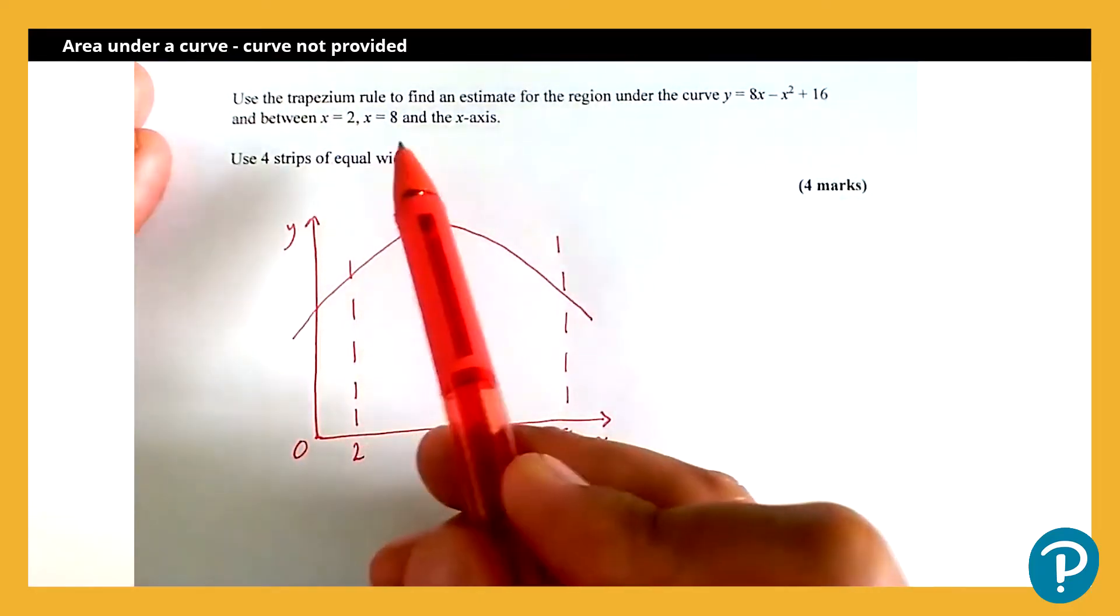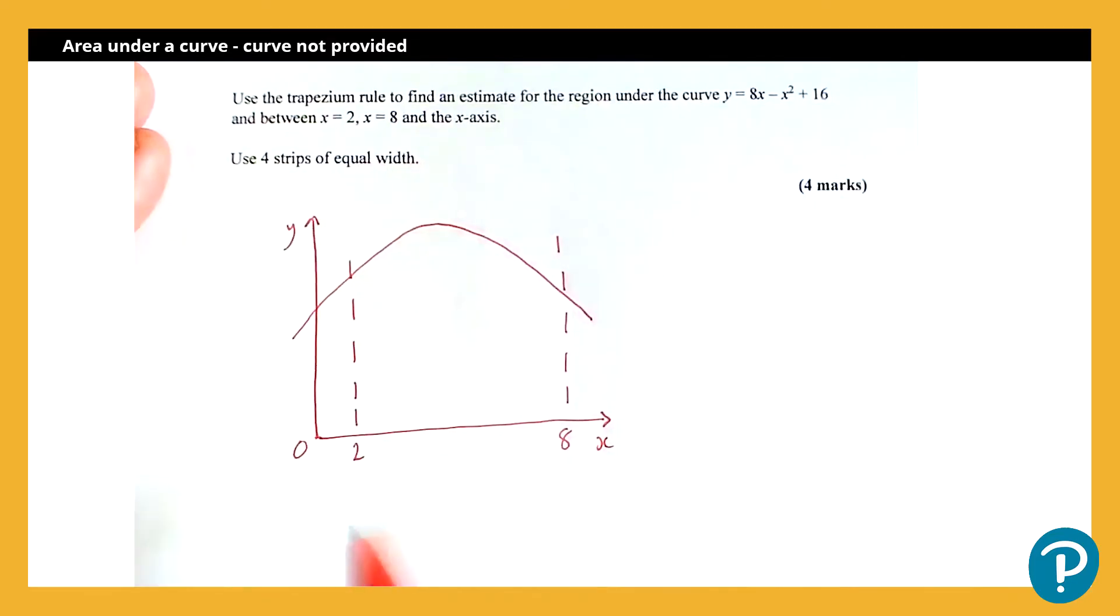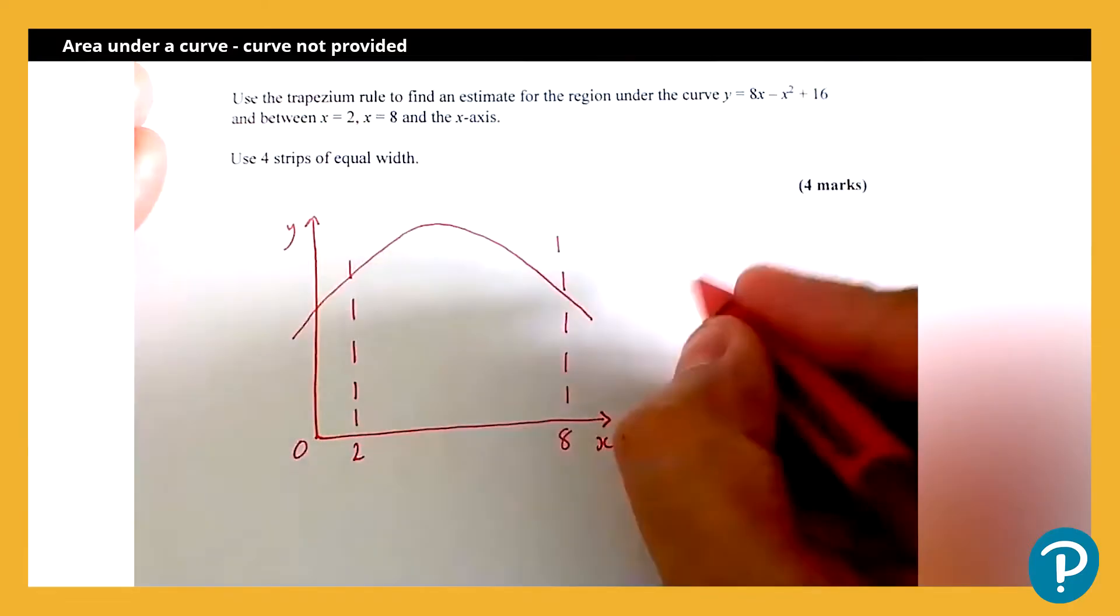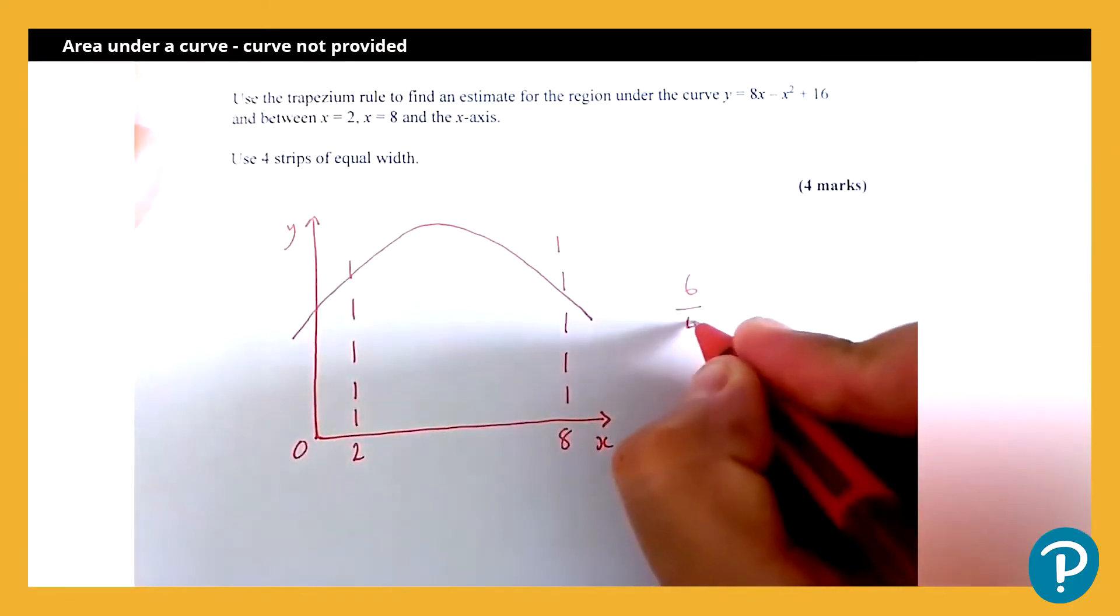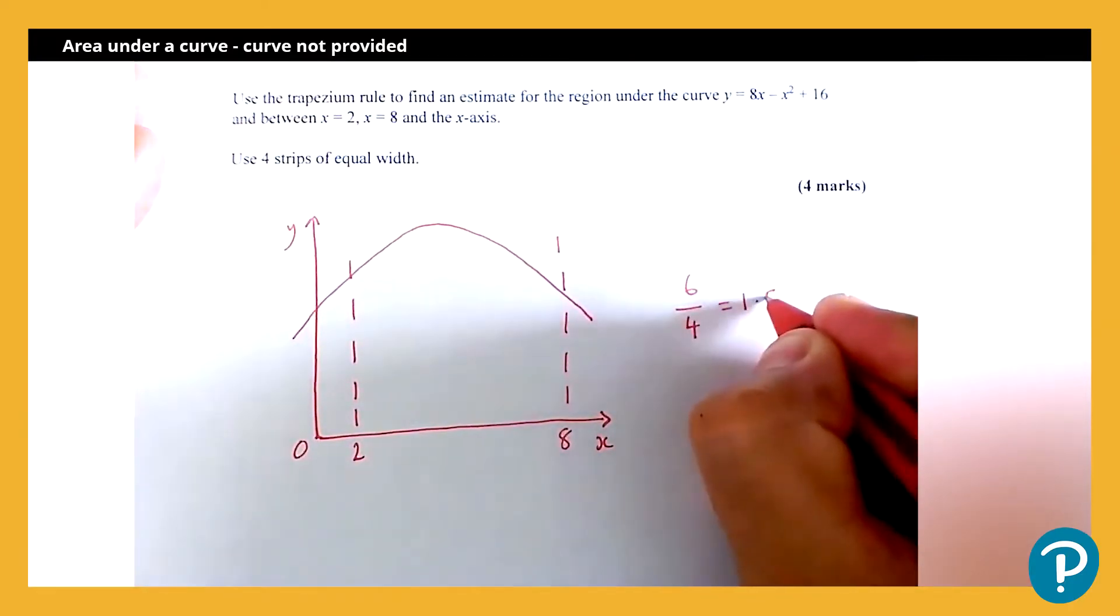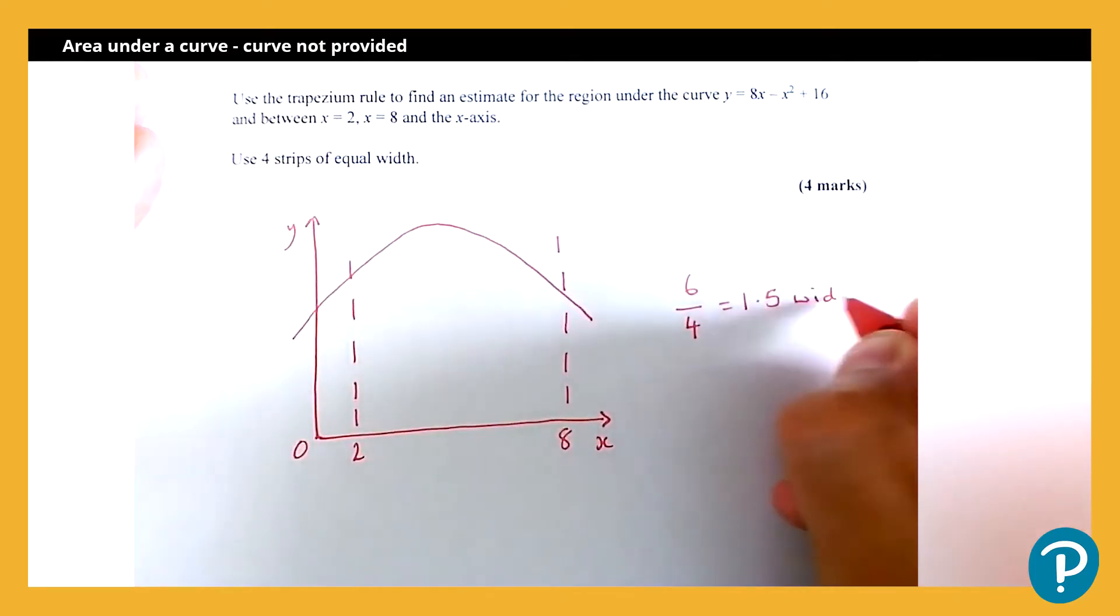Next thing it tells me is we need to use four strips of equal width. Now I need to work out how wide each of them strips are going to be. First thing I need to do is look at how wide is the region I'm interested in. Well, it's running from x equals 2 to x equals 8, so it has a width of 6. I'm splitting that into four equal strips. So each strip is going to be 1.5 wide.